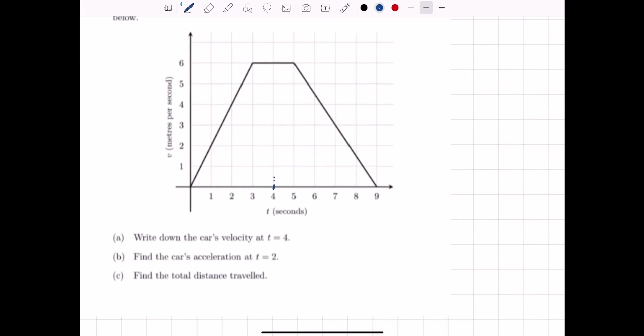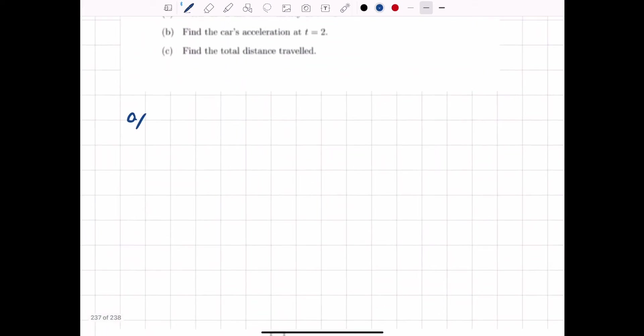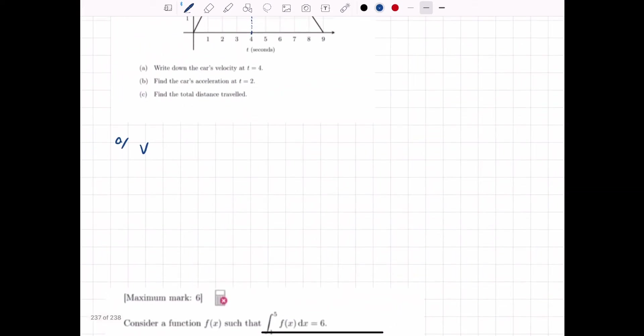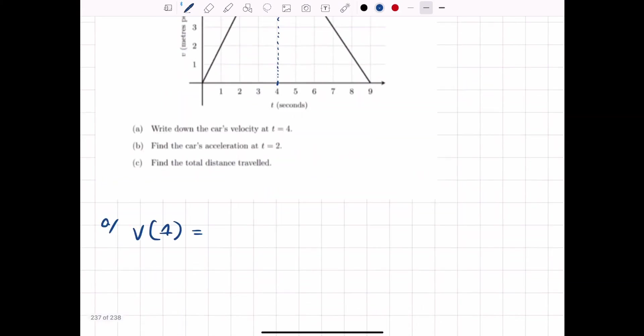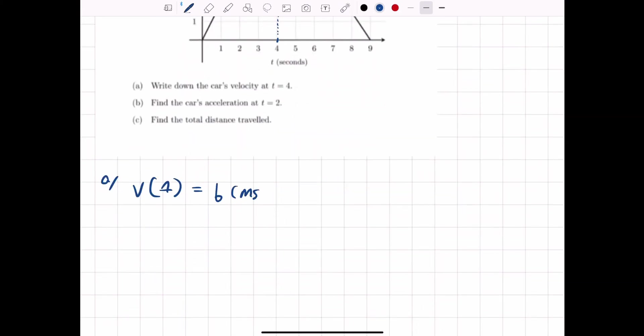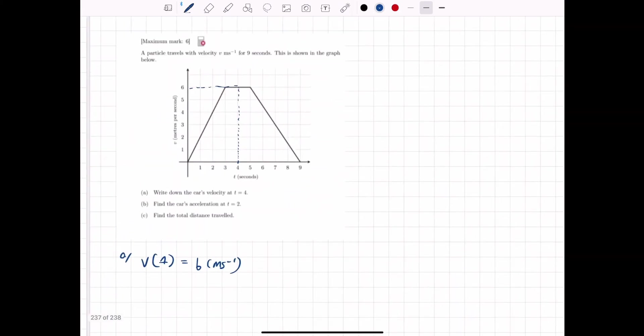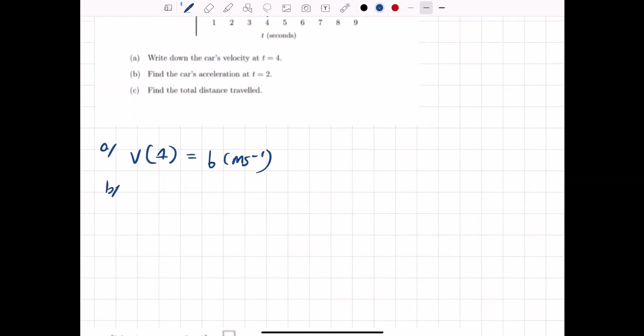Write down the car's velocity at t equals 4. This is a velocity time graph, so at t equals 4, we just do a little dot dot dot here. We get that velocity is equal to 6 meters per second. So if you want to be really proper about this, we say that v as a function of t, which in this case is 4 seconds, is equal to 6. If the IB is really picky, they'll want you to put units in.